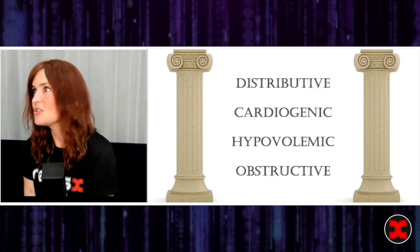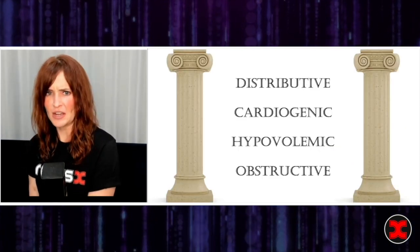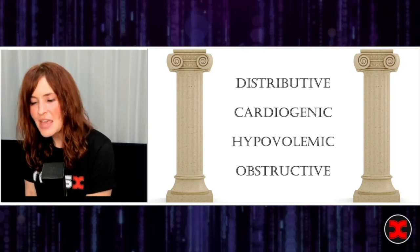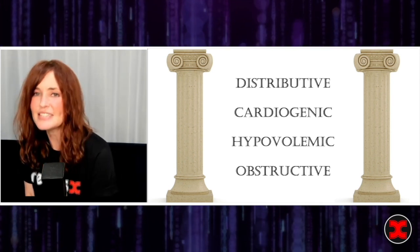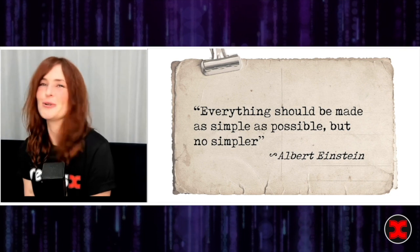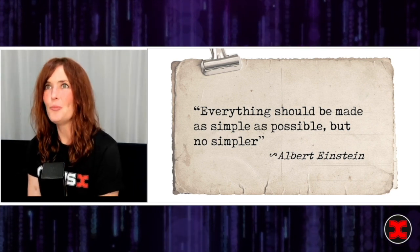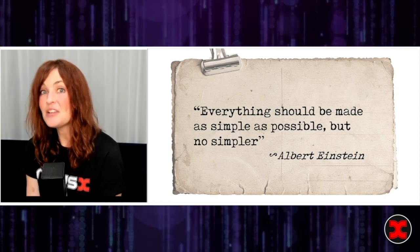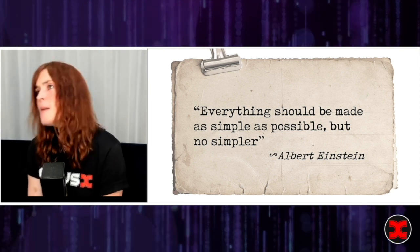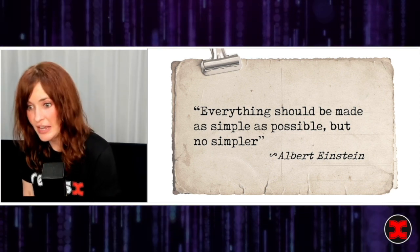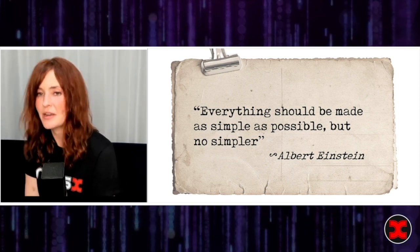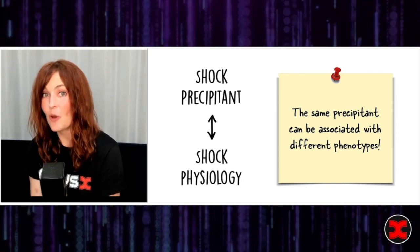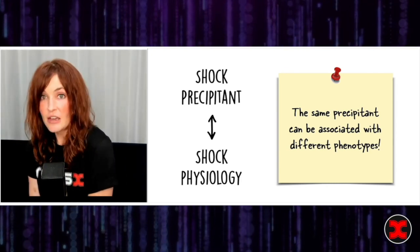The traditional classic distributive, cardiogenic, hypovolemic, obstructive model doesn't necessarily get you all the way there. It does sometimes, but not for everybody, and I think it suffers from two problems. The first is captured by one of my favorite quotes: everything should be made as simple as possible, but no simpler. Our traditional four-category model of shock may be too simple. Increasingly, there's something else we're beginning to understand about shock — shock precipitants and shock physiology are different things.